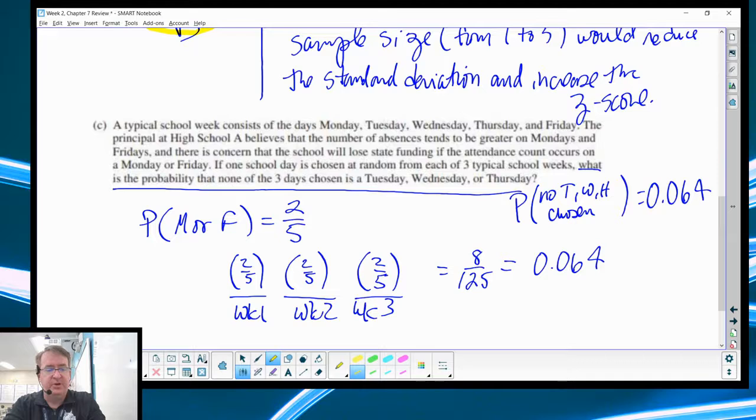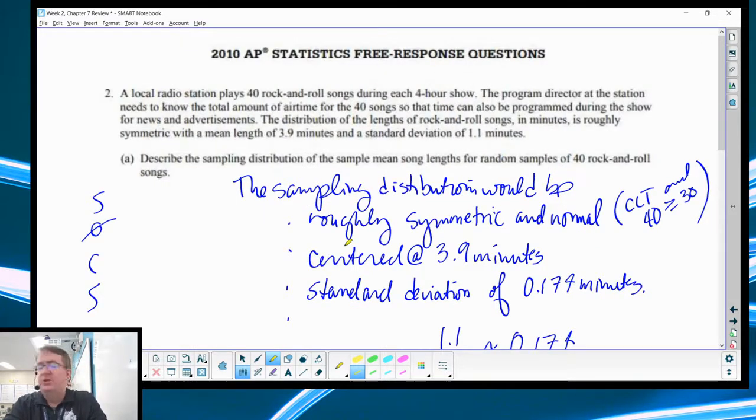Let's jump to the next one. The next one, I believe, comes from 2010. Question number two. A local radio station plays 40 rock and roll songs during each four-hour show. Program director needs to know the total amount of air times for the 40 songs. The distribution of the lengths of rock and roll songs in minutes is roughly symmetric with means of 3.9 and a standard deviation of 1.1. So, describe the sampling distribution of the sample means song lengths of random samples of 40 rock and roll songs.